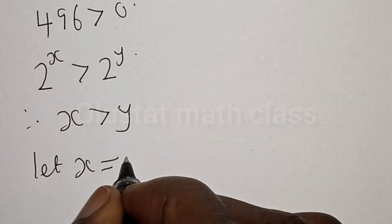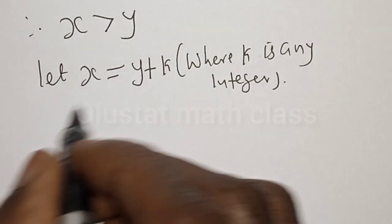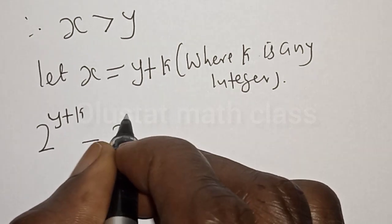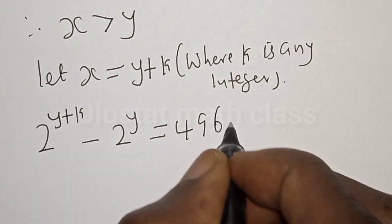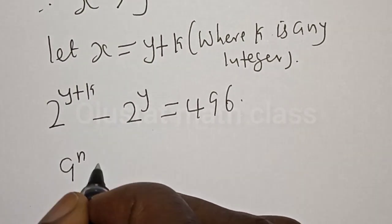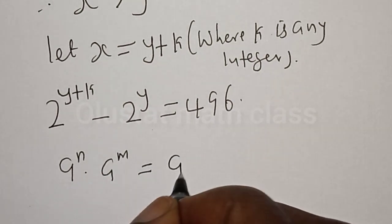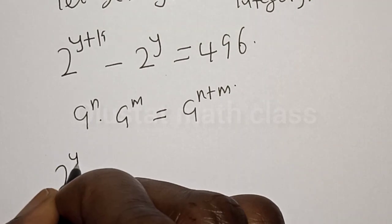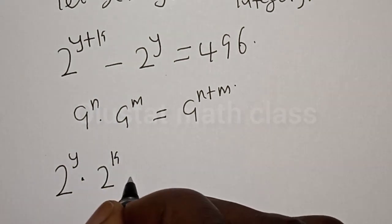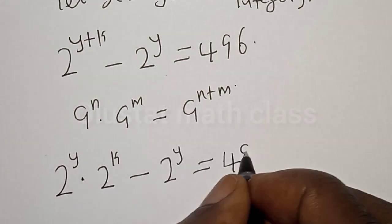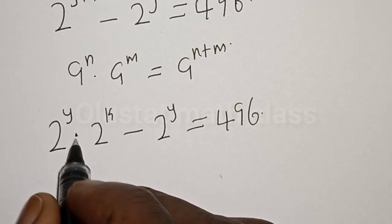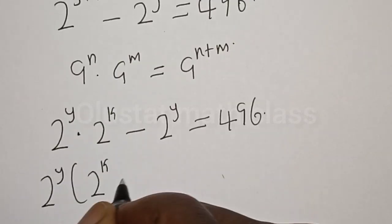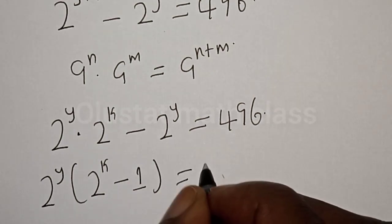Let x equal y plus k. We now substitute for x. We have 2 raised to power (y plus k) minus 2 raised to power y is equal to 496. Then we factor out 2 raised to power y: we have 2 raised to power y, multiplied by (2 raised to power k minus 1), is equal to 496.